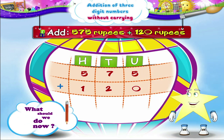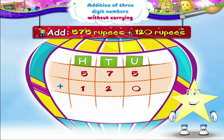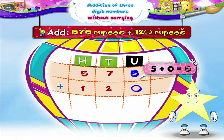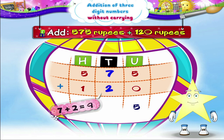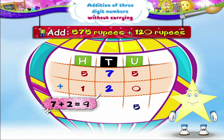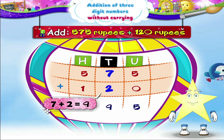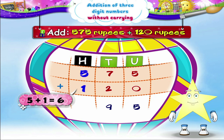What should we do now? Yes! Now we shall add the digits in the units place. 5 plus 0 is 5. Next, let's add the digits in the tens place. 7 tens plus 2 tens equals 9 tens. Then, 5 hundreds plus 1 hundred is equal to 6 hundreds.